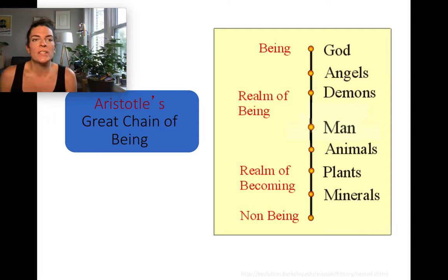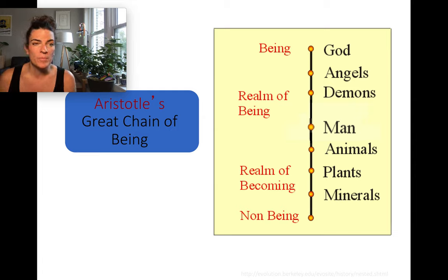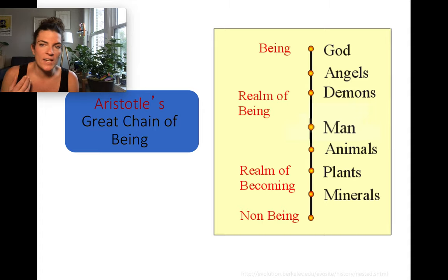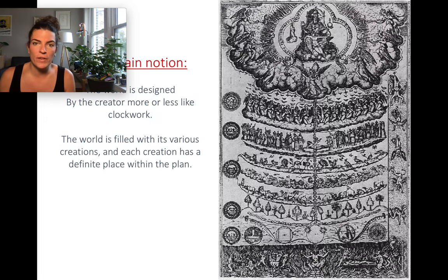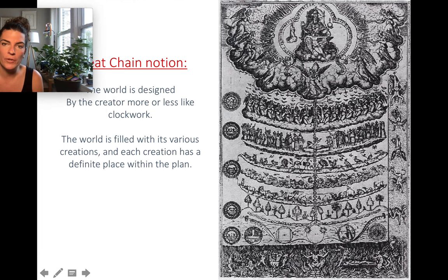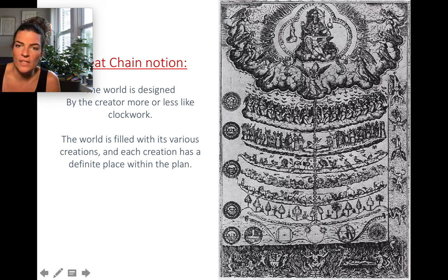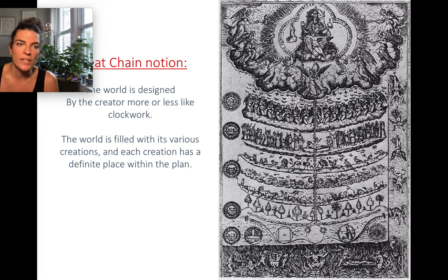These discoveries really upset a lot of European colonizers because they ascribed their beliefs of biology according to Aristotle's great chain of being. They thought of species how the church told them to — originating from Aristotle's great chain of being, which had God at the top, followed by his angels and his demons, then man, then animals, then plants, then minerals, then non-being things. You go from the realm of being to the realm of becoming to the non-being — a very hierarchical organization of what we would consider life on Earth.